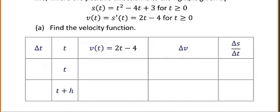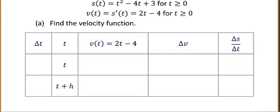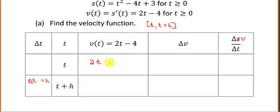Now if we start with the velocity function and calculate over an interval from t to t plus h, we can calculate the average acceleration. The change in time is h, and we calculate the change in velocity. The velocity at the left end, v of t, is 2t minus 4.